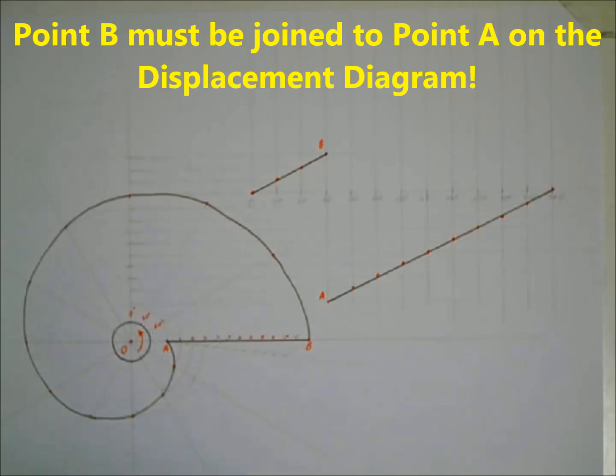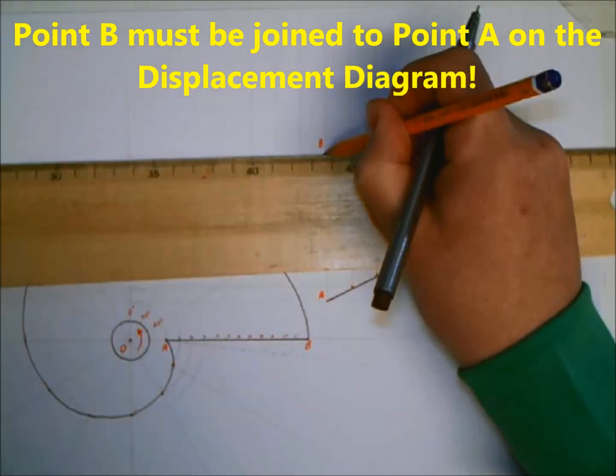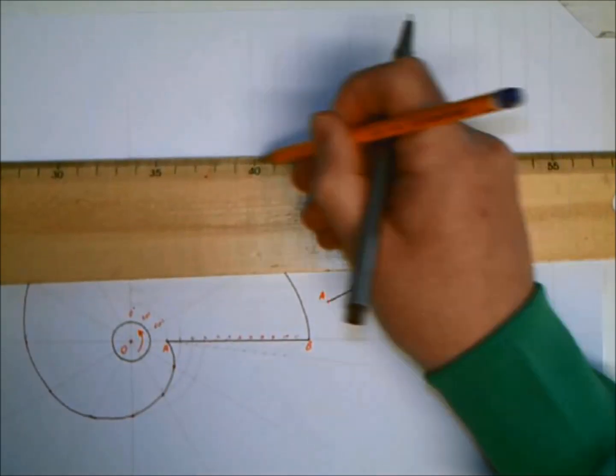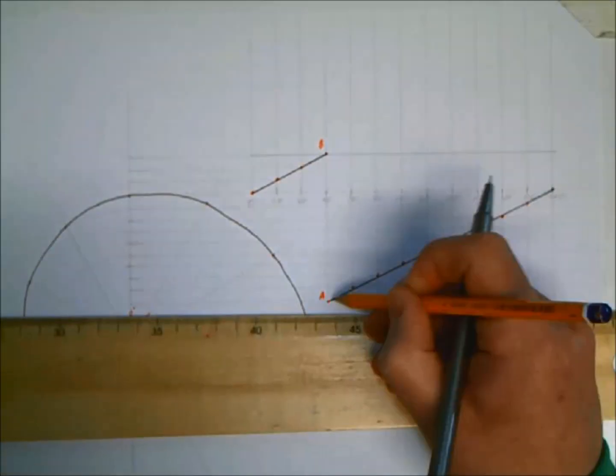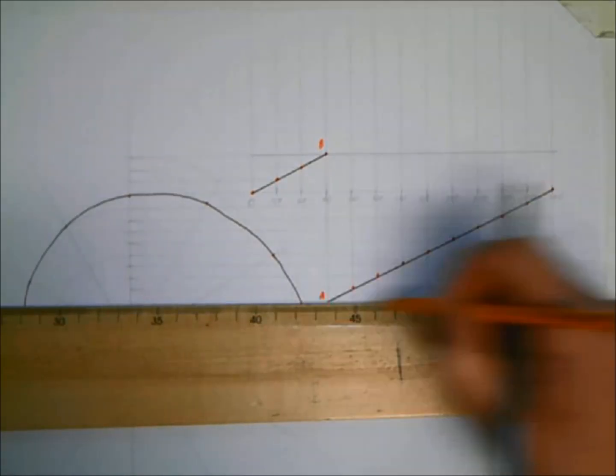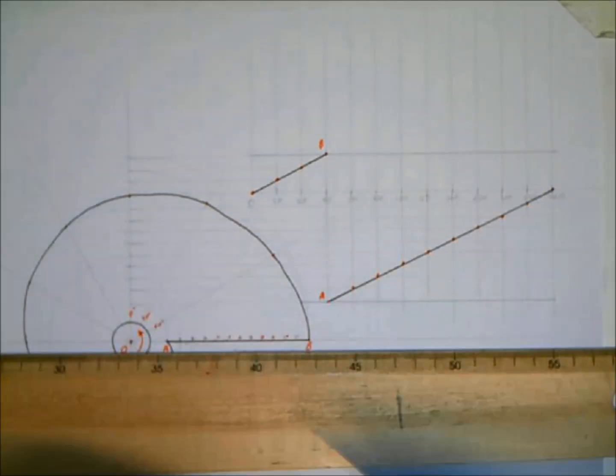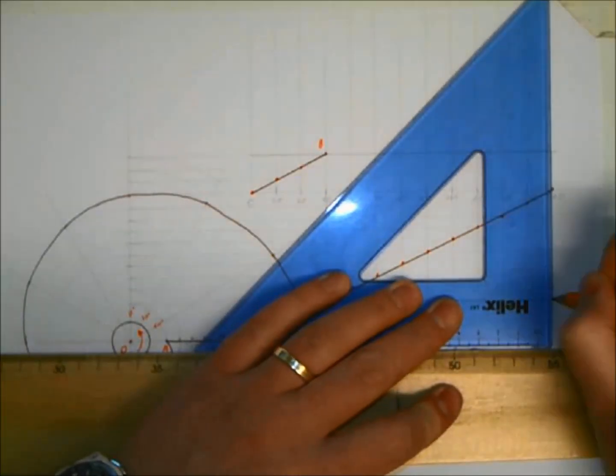The full height of the displacement diagram - point B there is the highest point. A is the lowest, so it should be going up to there. I put that a bit too close to the cam, but don't worry about it. That's your displacement diagram done.